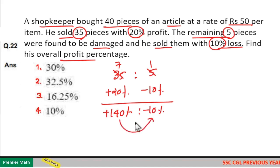Now if you take the overall, 140 percentage minus 10 percentage is equal to plus 130 percentage.